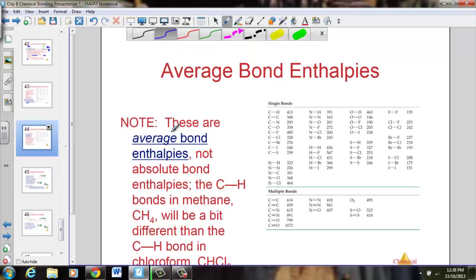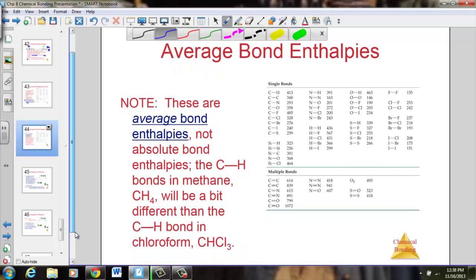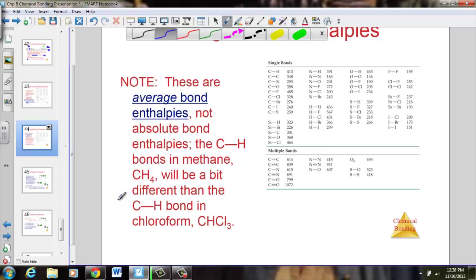Now it says note: these are average bond enthalpies, not absolute bond enthalpies. The C–H single bond in methane would be a slightly different amount if it had different attached atoms, creating a polar or non-polar molecule. But they are indeed close enough to create an approximate value for a bond being broken and a new bond being formed.